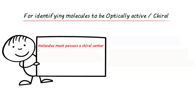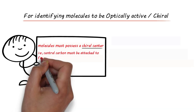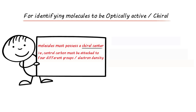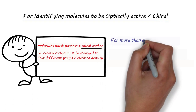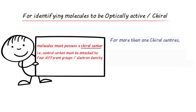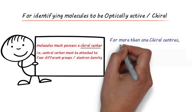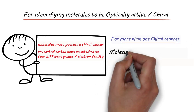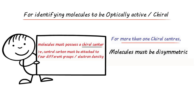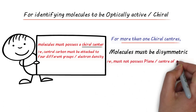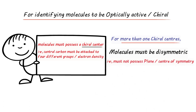The condition was that molecules must possess a chiral center, that is a center attached to four different groups or electron densities. In this case there is no need to check for plane of symmetry or center of symmetry. However, for molecules containing more than one chiral center, it is necessary to check for symmetry in that molecule — the molecule must not contain a plane of symmetry or center of symmetry.